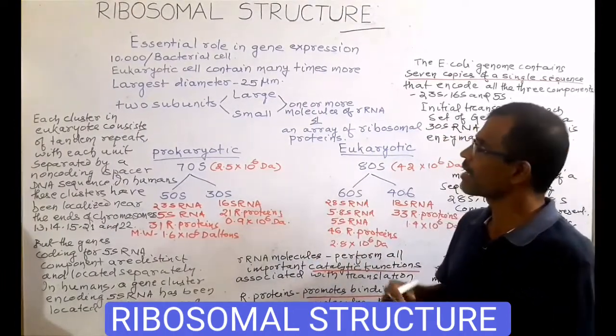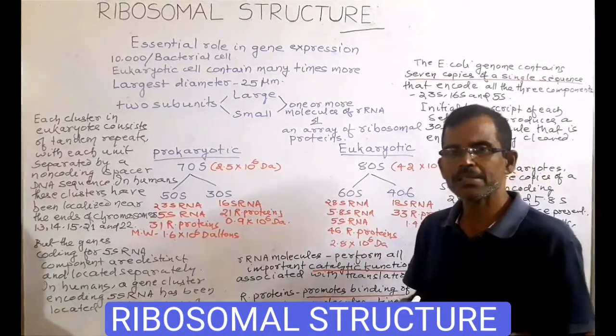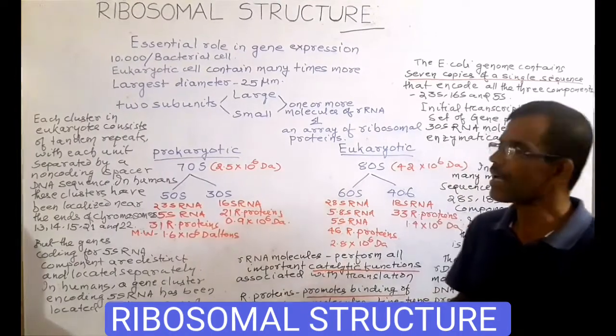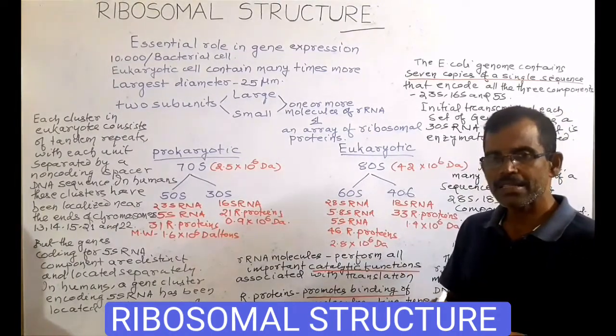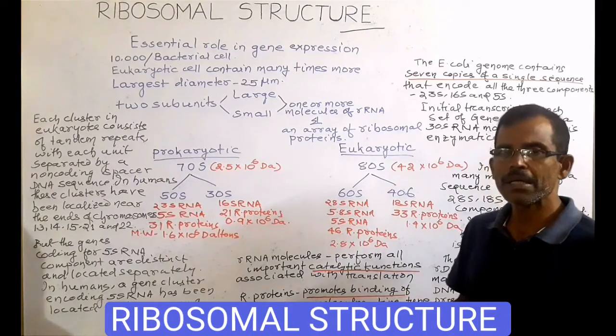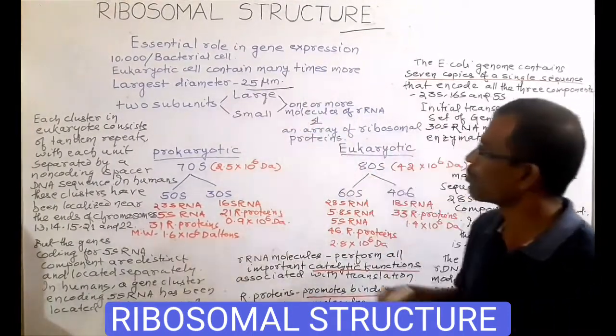A bacterial cell contains about 10,000 ribosomes, whereas a eukaryotic cell contains many times more. The largest diameter of a bacterial ribosome is about 25 micrometers.